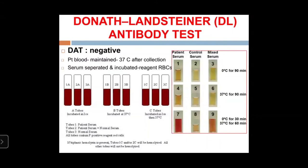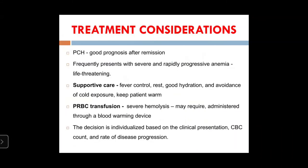To test for the Donath-Landsteiner antibody: when DAT is negative but PCH is strongly suspected, collect blood maintained at 37°C and divide into three tubes. Tube 1: maintained at 0°C for 90 minutes — no hemolysis. Tube 2: maintained at 37°C for 90 minutes — no hemolysis. Tube 3: first 0°C for 30 minutes, then 37°C for 60 minutes — hemolysis occurs only in this biphasic scenario, confirming the Donath-Landsteiner antibody. This can be complemented with control serum panels.